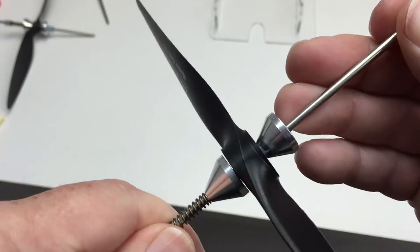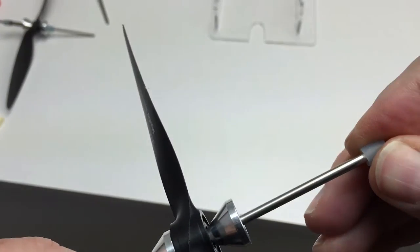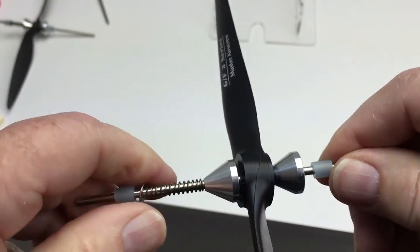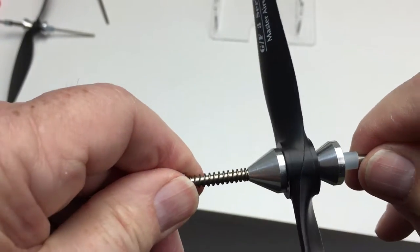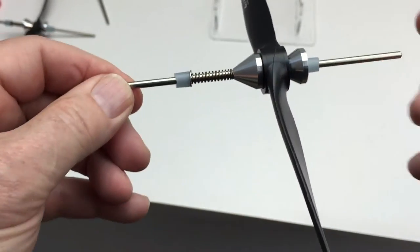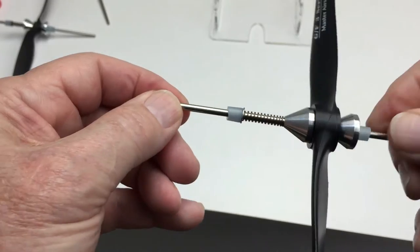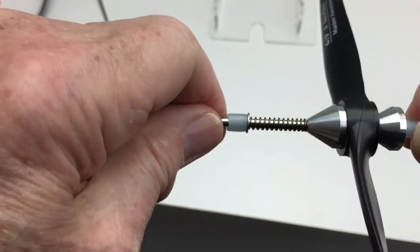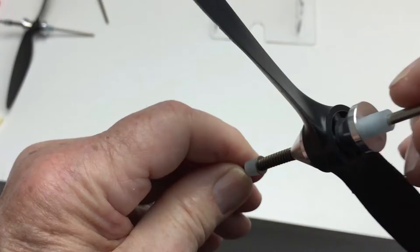Then you put the neoprene stop on, slide it on, and be sure that when you assemble it the cone goes into the hole and that the prop is right about the center of the mechanism. If it's not, slide this down, push everything together like this.